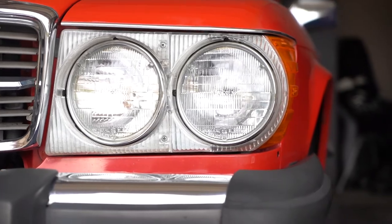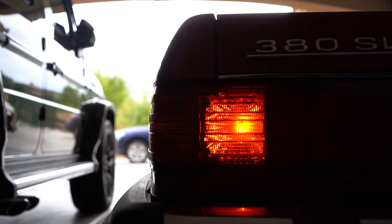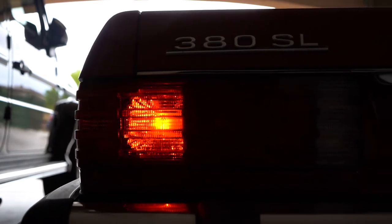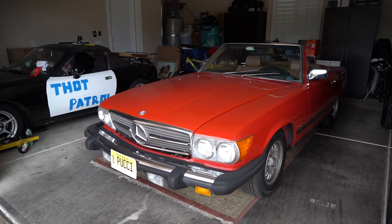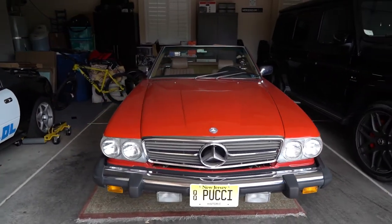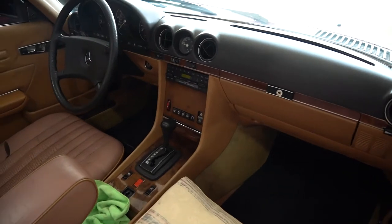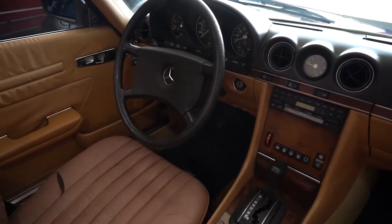The Mercedes-Benz R107 chassis was a sports luxury car produced between 1979 and 1989. It was the second longest running model series behind the G-Wagon. It's powered by a variety of V8 engines ranging from 3.8 all the way up to 5.5 liters of displacement.